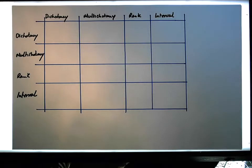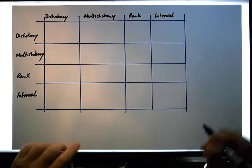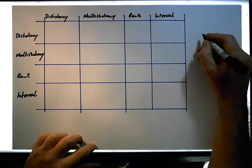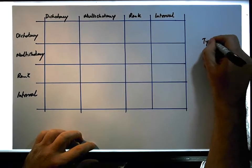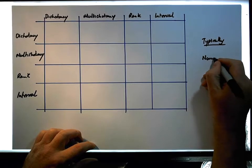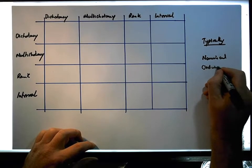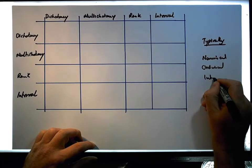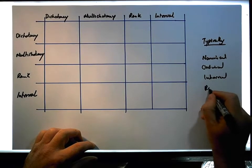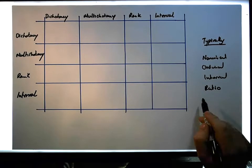So in this particular video, I'm going to look at four different types of variables — four different scales of measurement. Typically in a standard stats book we would have four scales of measurement: nominal variables measured on a nominal scale, ordinal, interval, and what's known as a ratio scale of measurement, where variables are measured on a ratio scale.